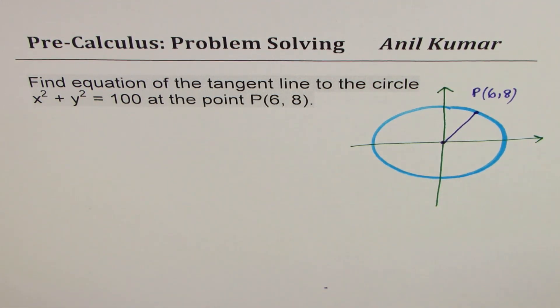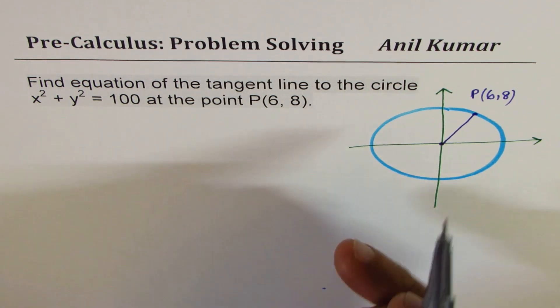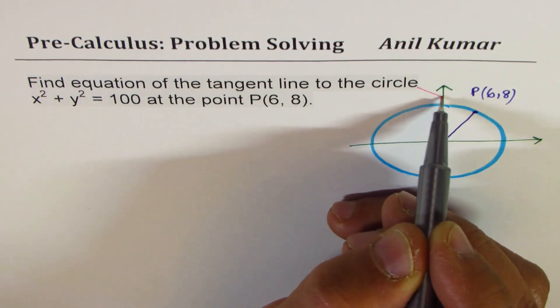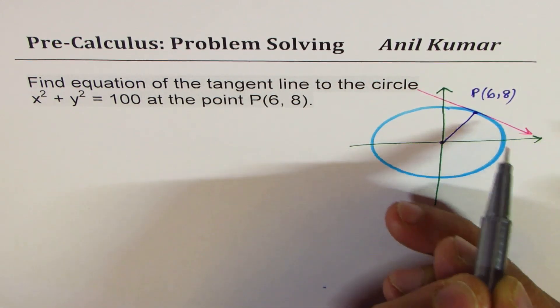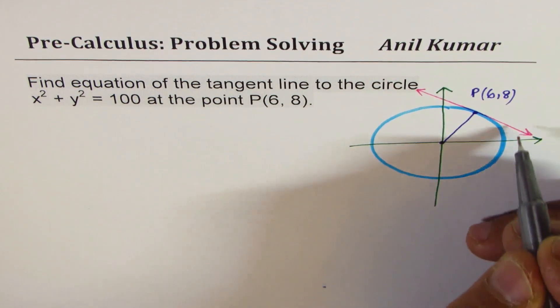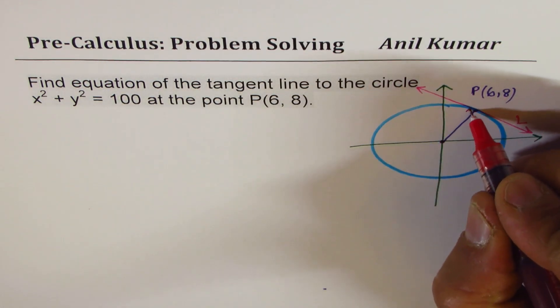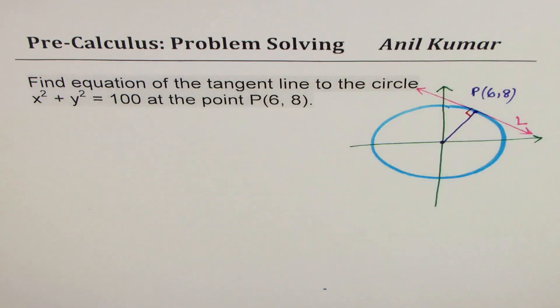We need to find equation of a tangent line to the circle at this point. It really means that we have drawn tangent, which will be kind of like this. So that becomes the tangent line. Let's call this line as L. If the line is tangent, in that case, it has to be perpendicular to the radius.